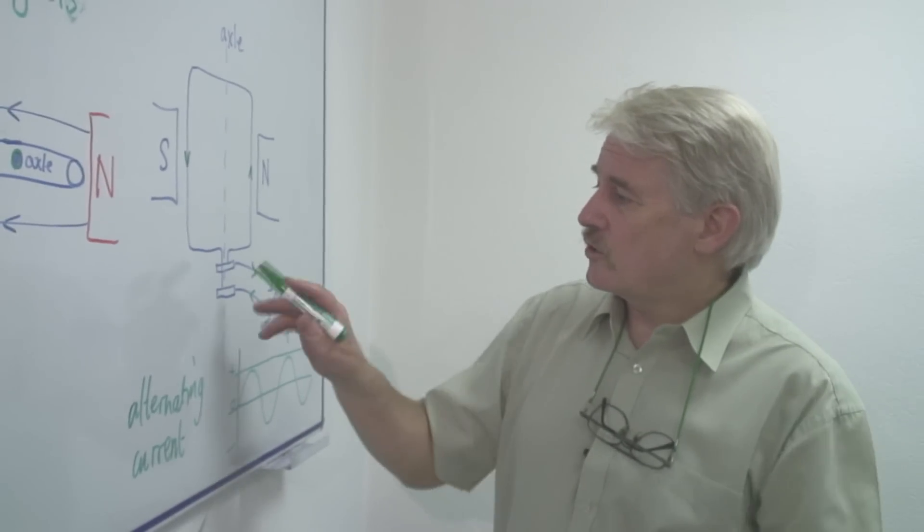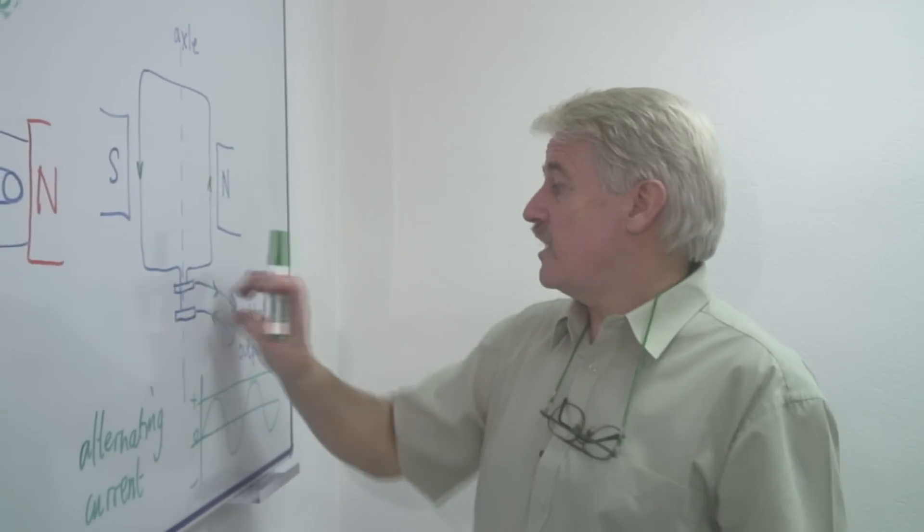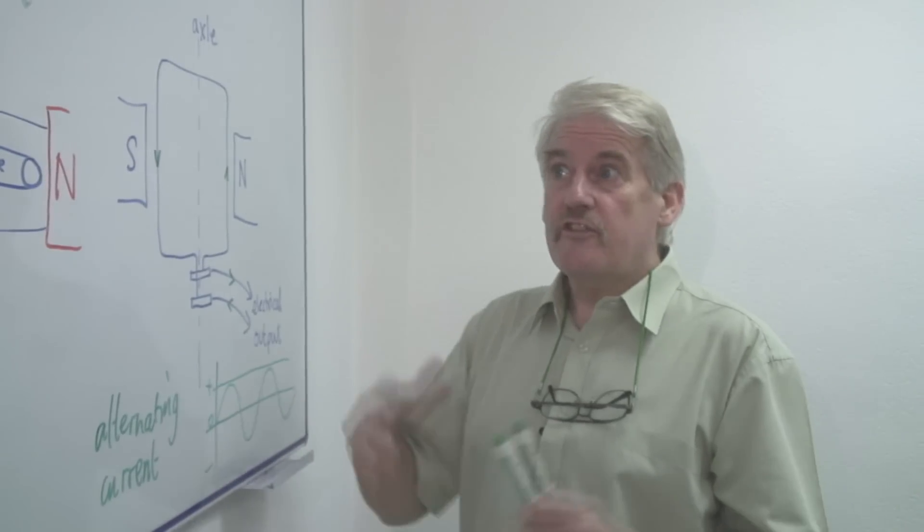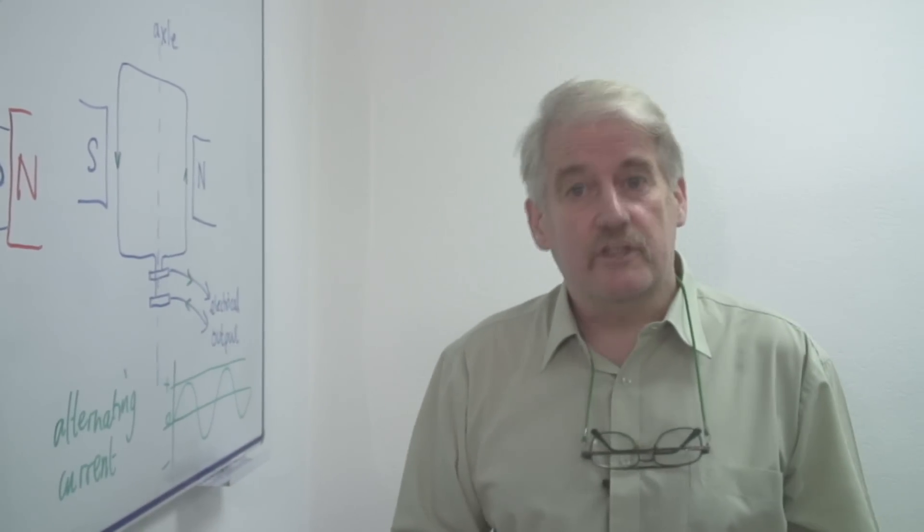Here we have what are called slip rings, which connect the coil to the output. So this briefly is how an electrical generator works.